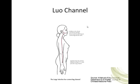Our Luo-connecting channel begins at Pian-li, Large Intestine 6. There's a deep connection to Hand Tai-yin — to the internal-external pair — so it connects with the lung channel. Then it travels on its own up the lateral aspect of the arm, passing through the lateral aspect of the elbow, crossing the shoulder, traversing the neck to the cheek, where it splits: one branch enters the ear, the other branch connects with the teeth.